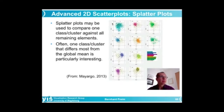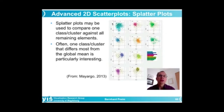You remember that overplotting was an essential problem, and we discussed several solutions, for example, based on aggregation of the data, leading to density plots or bin representations.